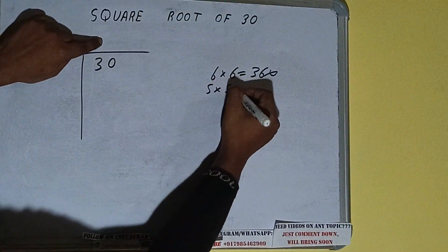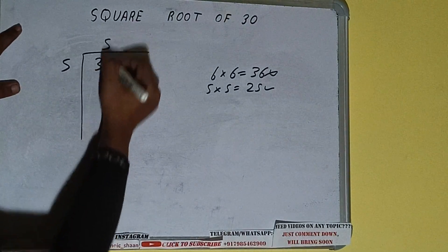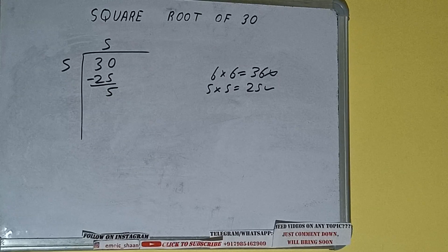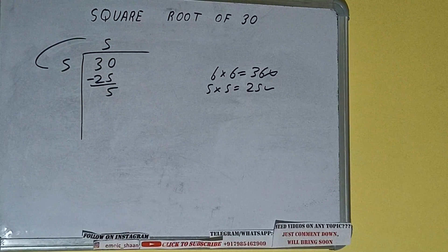here and 5 here, it will be 25, which is good to take. So 5 here and 5 here, 25, subtract, 5 will be left. We did 5 into 5, so add both. 5 plus 5 will be 10.